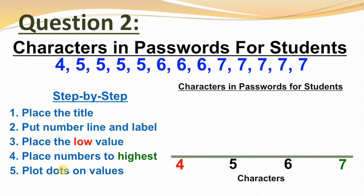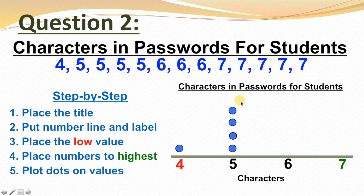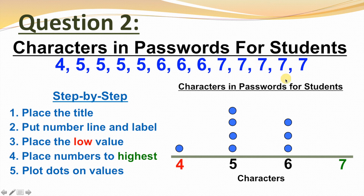Starting with fours — we have one four, so we'll put one dot. For fives — we have four fives, so we'll put four dots. For sixes — we have three sixes, so we'll put three dots on six. And for sevens — we have five sevens, so we'll put five dots on our seven.